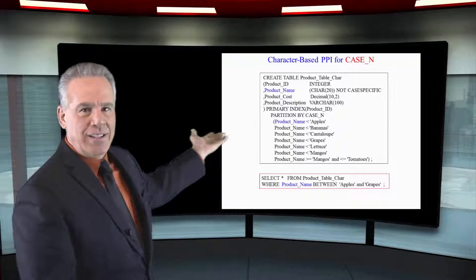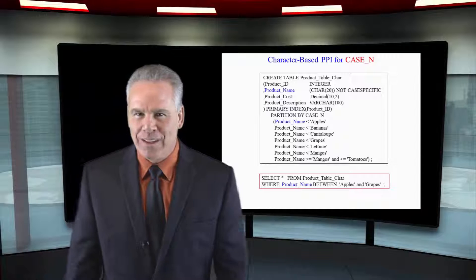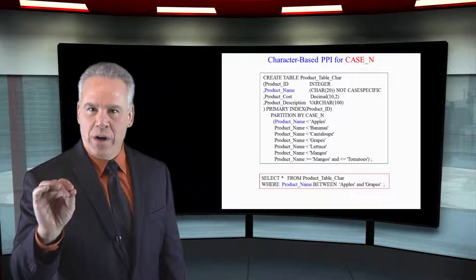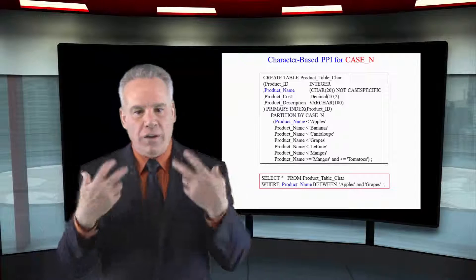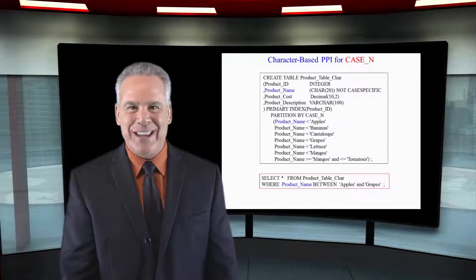We're actually going to do a CASE_N where we've got the actual product name less than apples, less than bananas, less than cantaloupes, grapes. So when users query and say, I'm going to find out all of the things between apples and grapes, it's not going to do a full table scan.